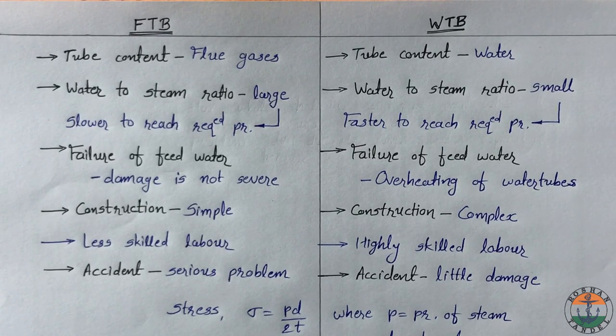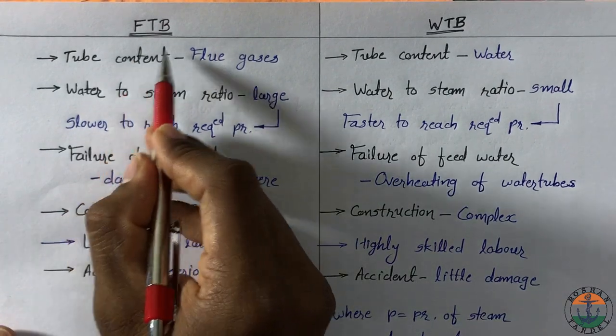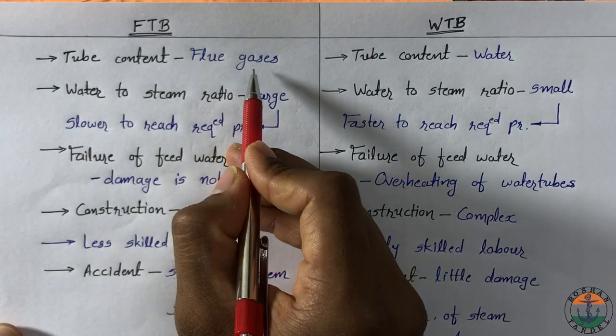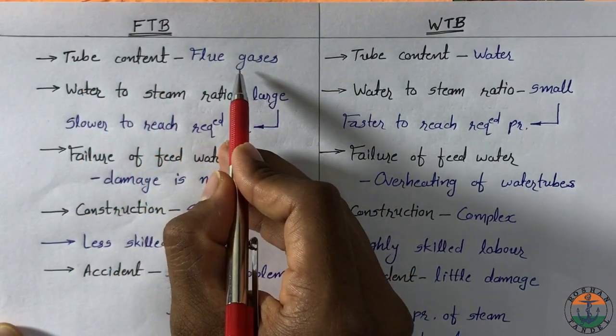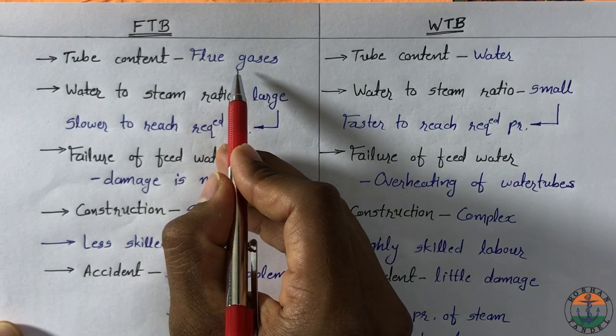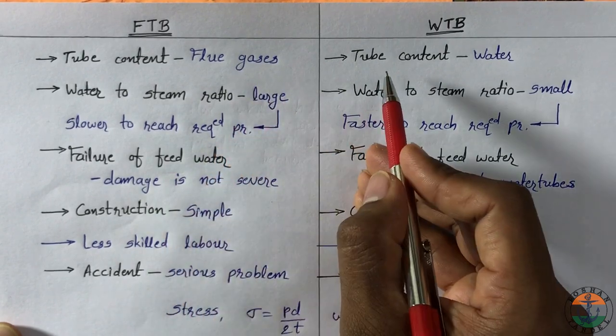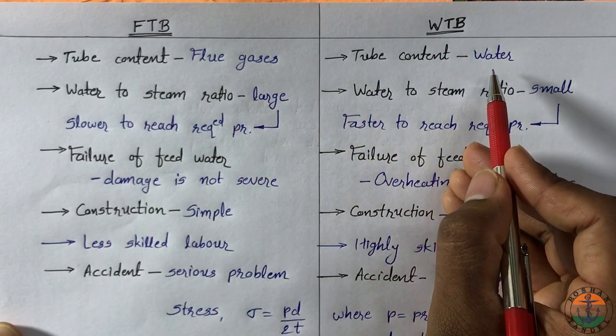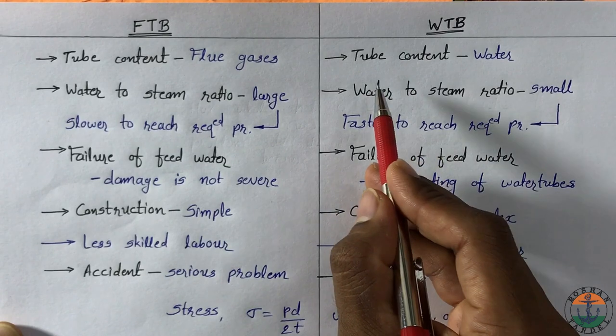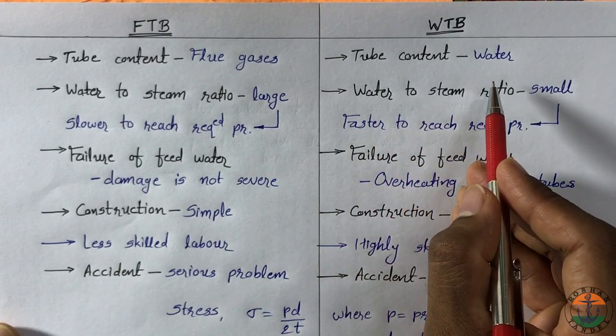There is a difference between fire tube boiler and water tube boiler. Fire tube boilers have products of combustion which means flue gases passing through the tubes. And these tubes are surrounded by water. In water tube boiler, water is flowing through the tubes. And these water tubes are surrounded by hot flue gases.